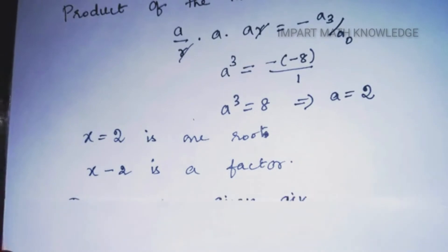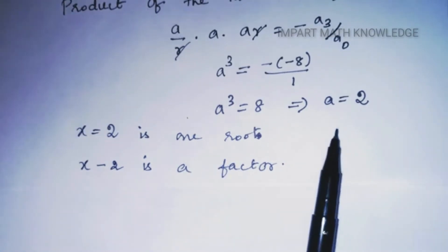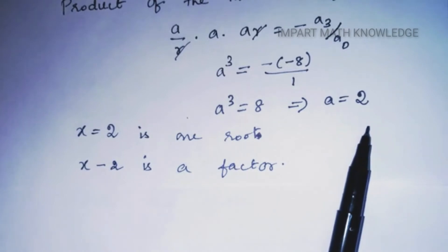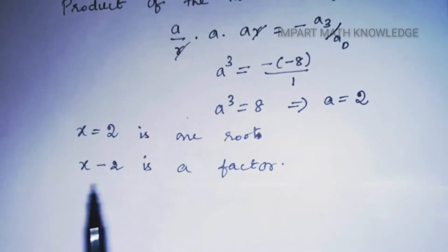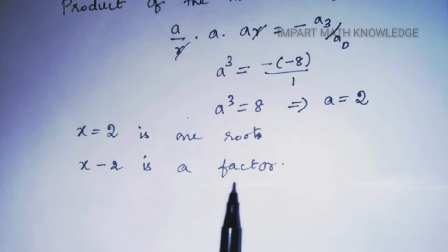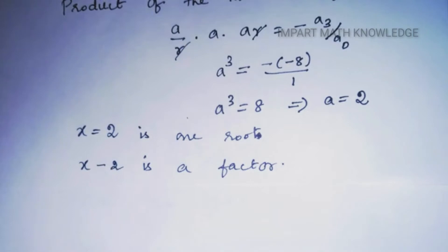Since a = 2 is one root, x − 2 is a factor of the given equation. Now divide x³ − 7x² + 14x − 8 by (x − 2) to get a second-degree equation, from which we can find the other two roots.